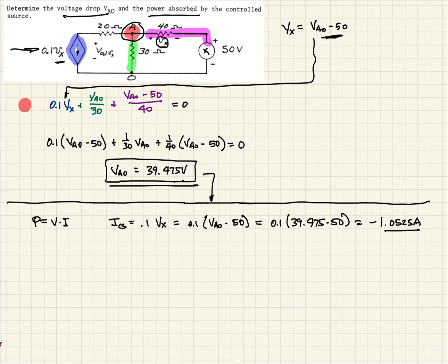So now we want to do a KVL equation, do a loop voltage equation. And we're going to do it around this loop here. And we're going to start at 0. So when we do that, going from 0 to A, we already know is, that's VA0 or the negative of it.